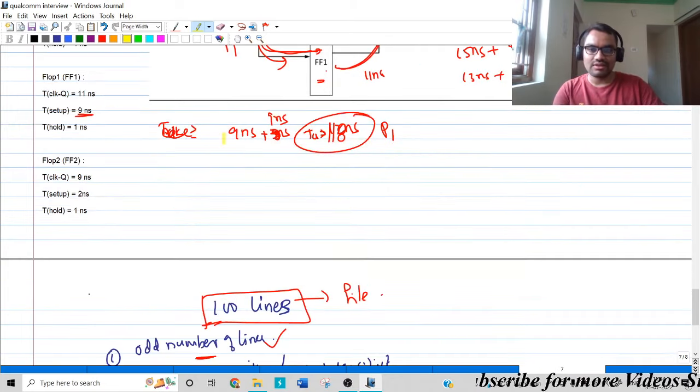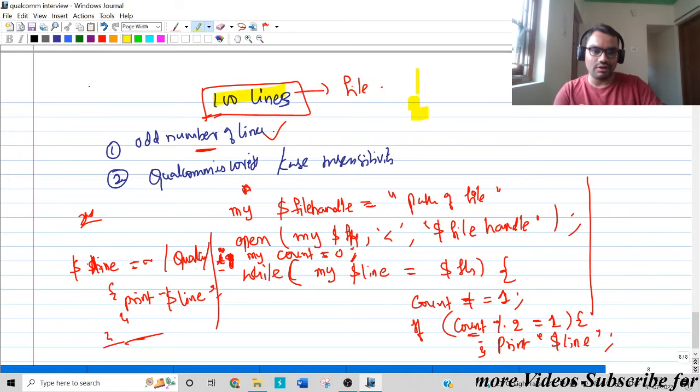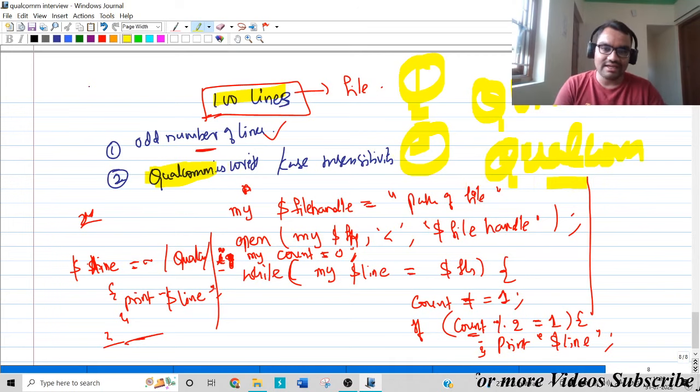Since I also mentioned Perl and Tcl scripting knowledge in the resume, one question on scripting was asked. You have a file of 100 lines in this format, one, two, three, four. The idea is to print all the odd number of lines - line one, line three, line five, and so on. In the even number of lines, if there is anywhere the term or word 'Qualcomm' encountered, irrespective of the case - it can be either all capitals or capital small, any combination - the idea is to detect such even number of lines. If a line is even and it encountered or has a Qualcomm word, then it needs to be printed.